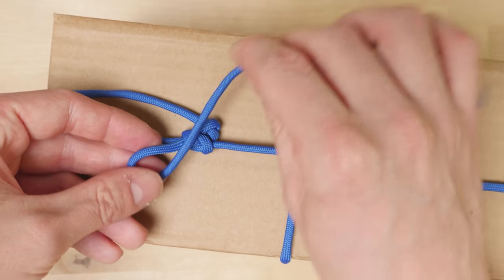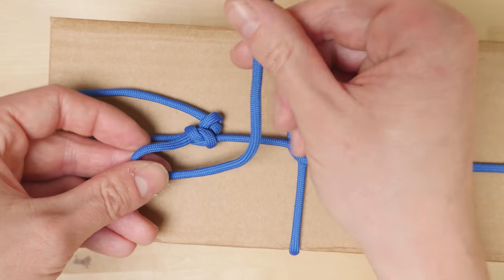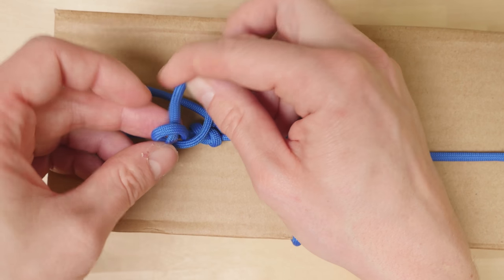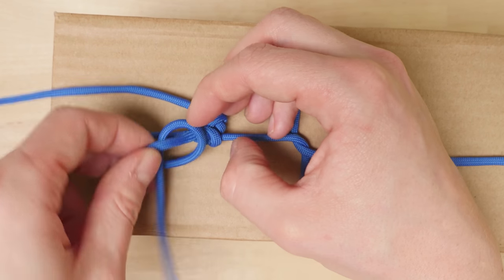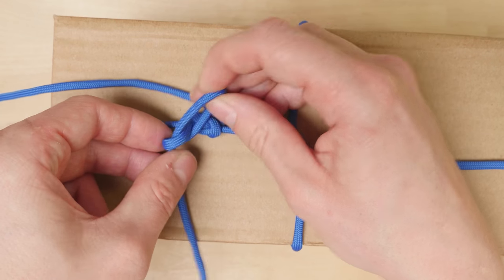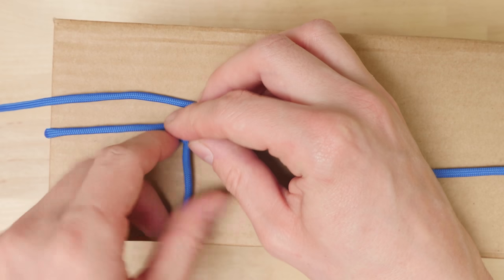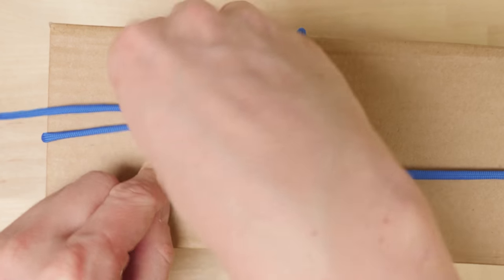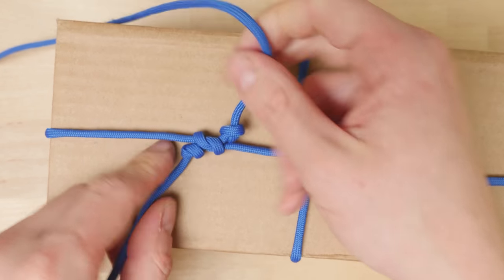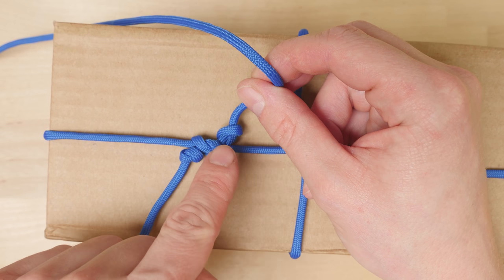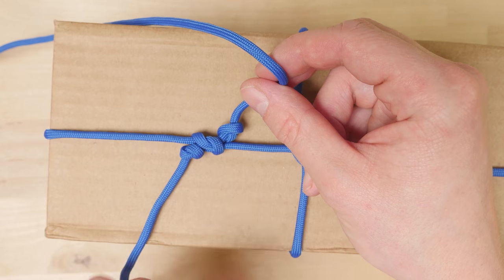So again, I make a loop, then I feed the working end through, then tighten up the overhand knot. And this way we secure the reef knot so that it won't come undone if our package gets moved around a lot.